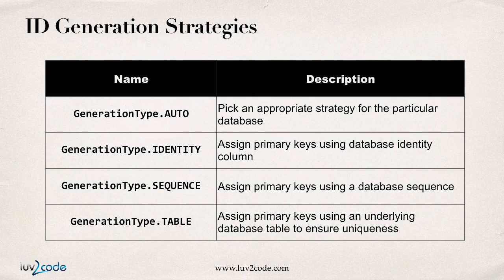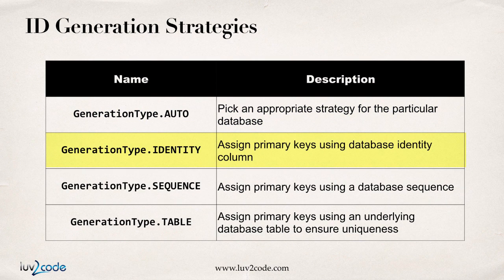You may wonder what are some of the other generation strategies available — here's the laundry list. You can say GenerationType.AUTO, where Hibernate will basically pick an appropriate strategy for the particular database. You can also have GenerationType.IDENTITY, which assigns the primary keys using the database identity column — that's what we used previously for auto-increment. Or you can make use of GenerationType.SEQUENCE, which assigns primary keys using a database sequence, like if you're using an Oracle database — Oracle has this concept of sequences and you can leverage that.